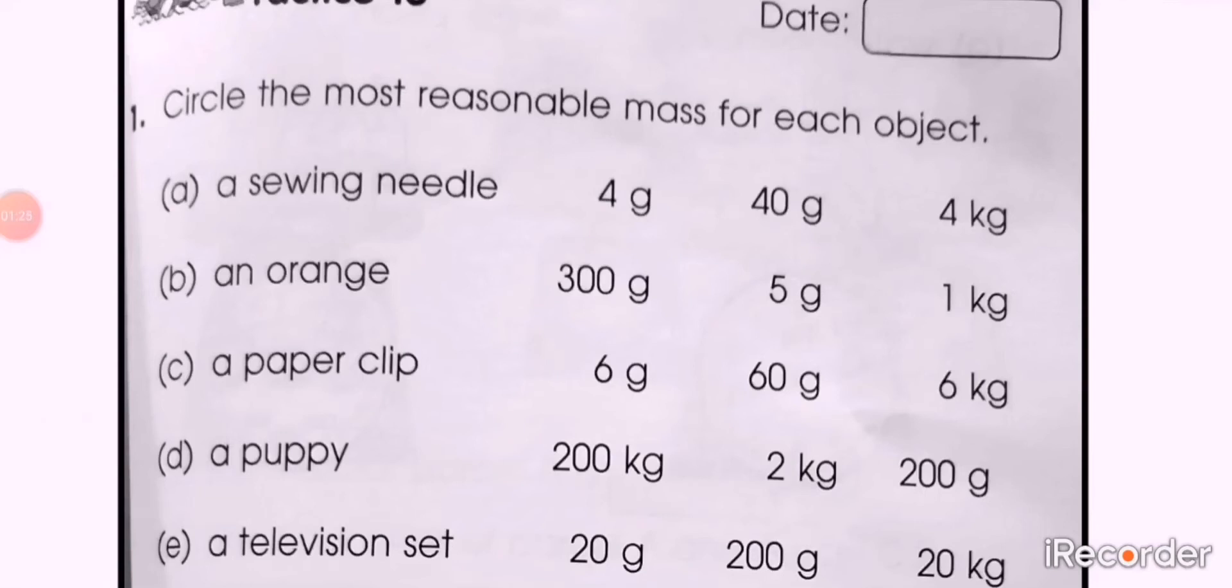Part B: an orange, a fruit. Again three options are here: 300 grams, 5 grams, and 1 kg. Select the unit first. Is it in grams or kilograms? If it is in grams, then circle the one option from 300 grams and 5 grams.